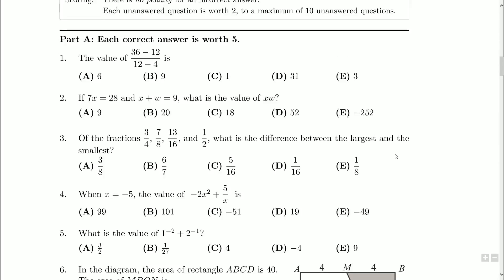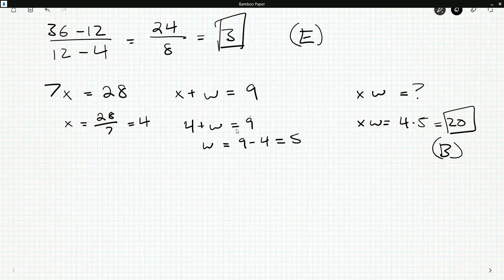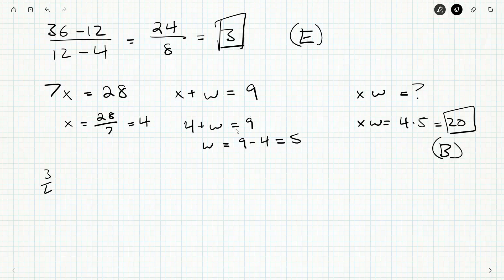To answer this question, we're going to have to order these fractions. We have three-fourths, seven-eighths, thirteen-sixteenths, and one-half. How are we going to order these? Well, how can we order fractions in general?